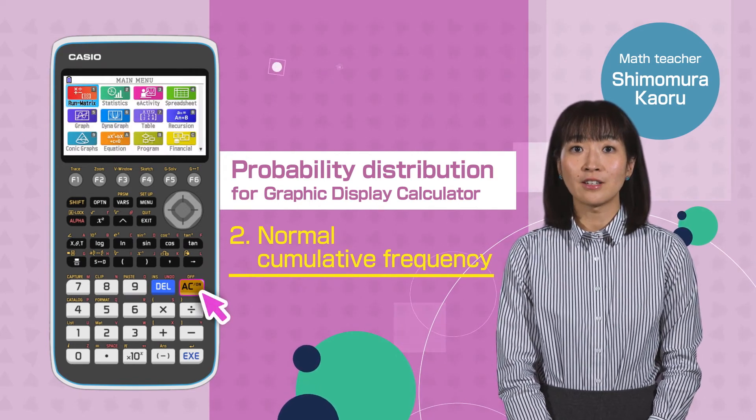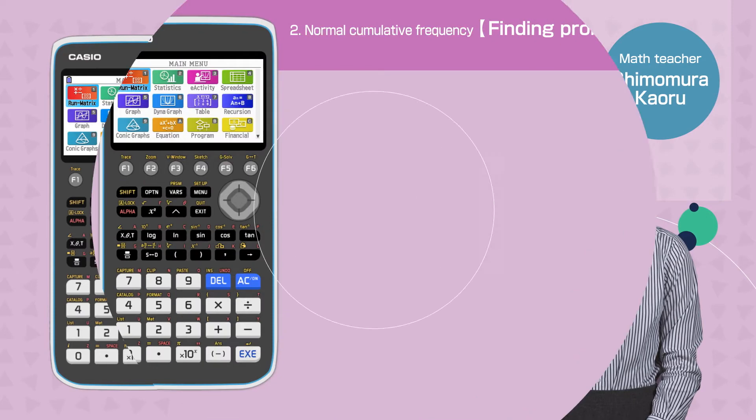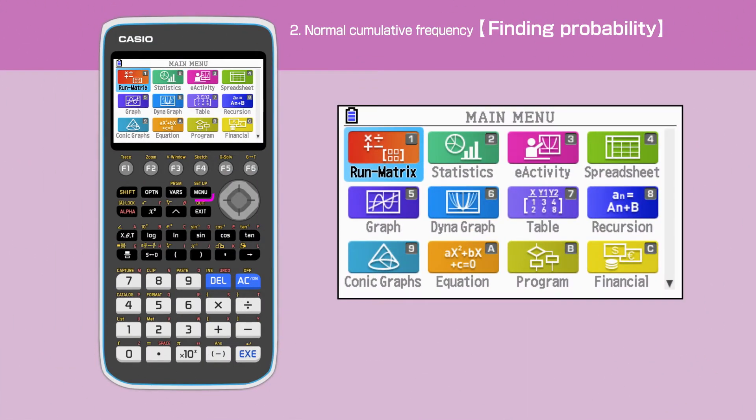Switch on your calculator by pressing the AC button. Press the Menu key to open the main menu, then move the cursor or press 2 to select the statistics function.